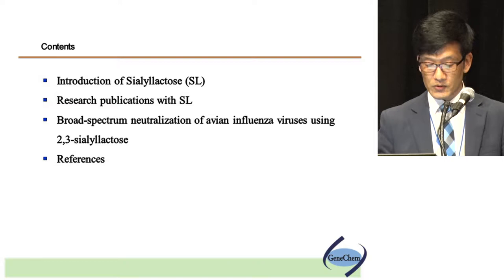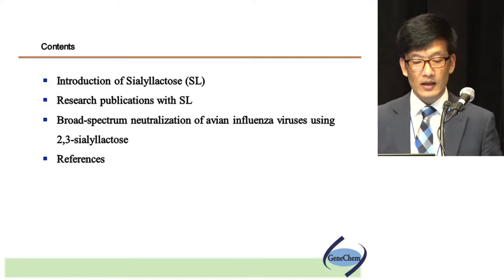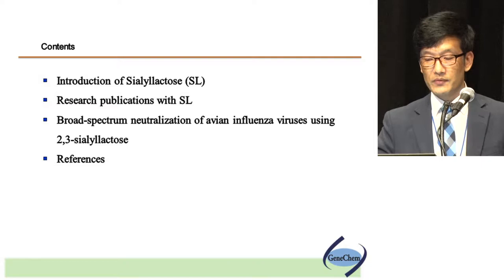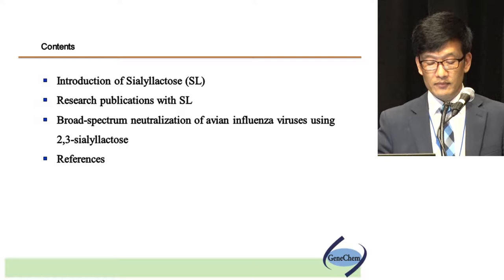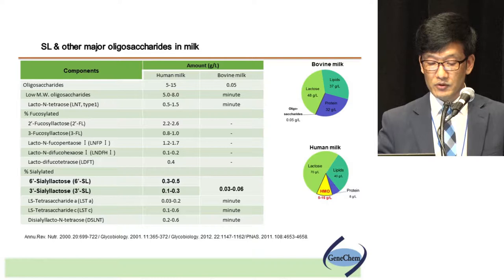Coming to the introduction: CLL lactose, as we all know, is the key human milk oligosaccharide, which is composed of sialic acid bound to a lactose molecule. We, Jin Kim, are the only company that manufactures 3CL lactose and 6CL lactose in bulk quantity.